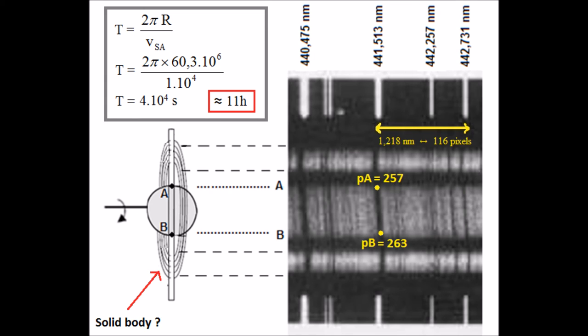If the shift of the outer edges compared to the reference line had been greater than the shift of the inner edges, then the speed of the outer edges would have been greater than the speed of the inner edges, which means the rings would have been a solid body secured to Saturn.